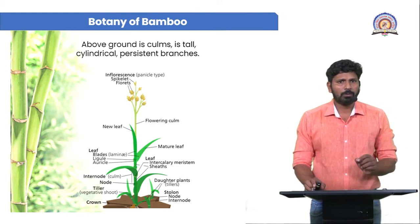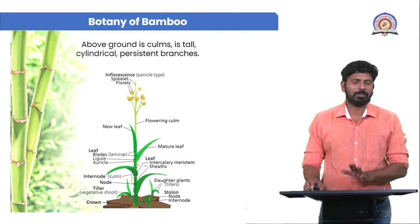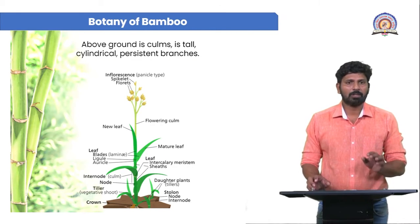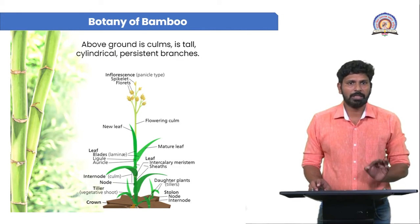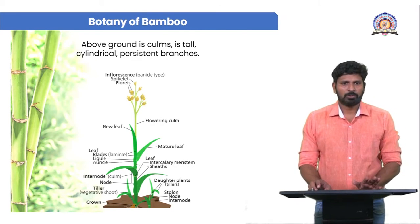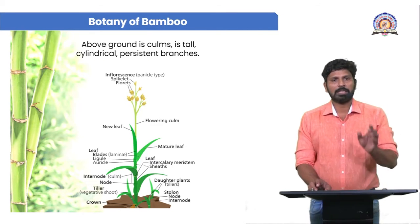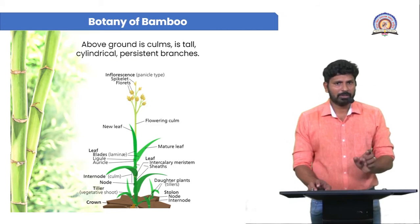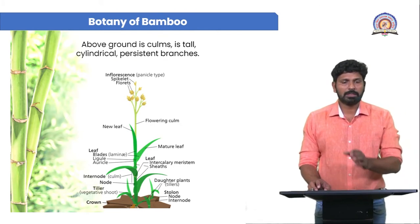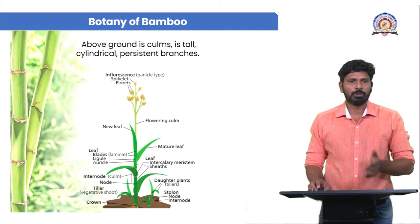The above-ground portion of Bamboo is called culms — C-U-L-M-S. Culms are tall, cylindrical, and have persistent branches. So whatever morphological structure we observe about Bamboo — that is the culm. You can see in the diagram the above-ground portion of Bamboo, which is cylindrical with persistent branches.